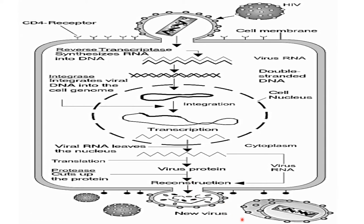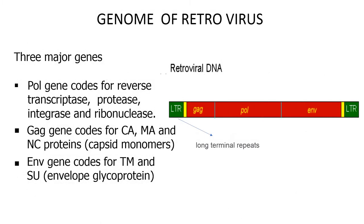The reconstructed viral components then start to come out of the host cell after transduction, through which new viruses are synthesized. This completes the replication cycle of a retrovirus. The genome of a retrovirus consists of a long terminal repeat (LTR), gag gene, pol gene,